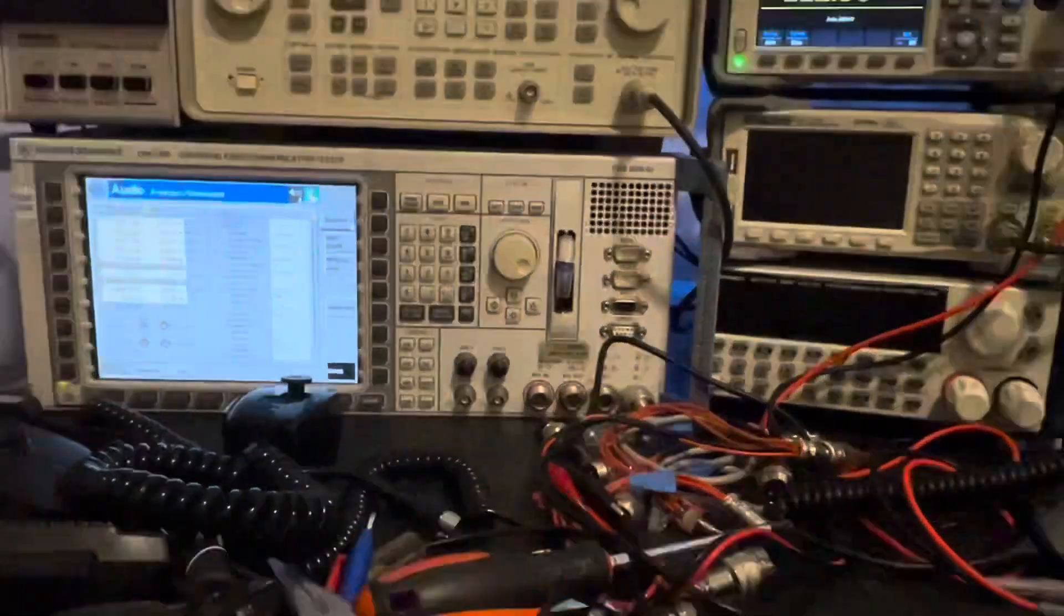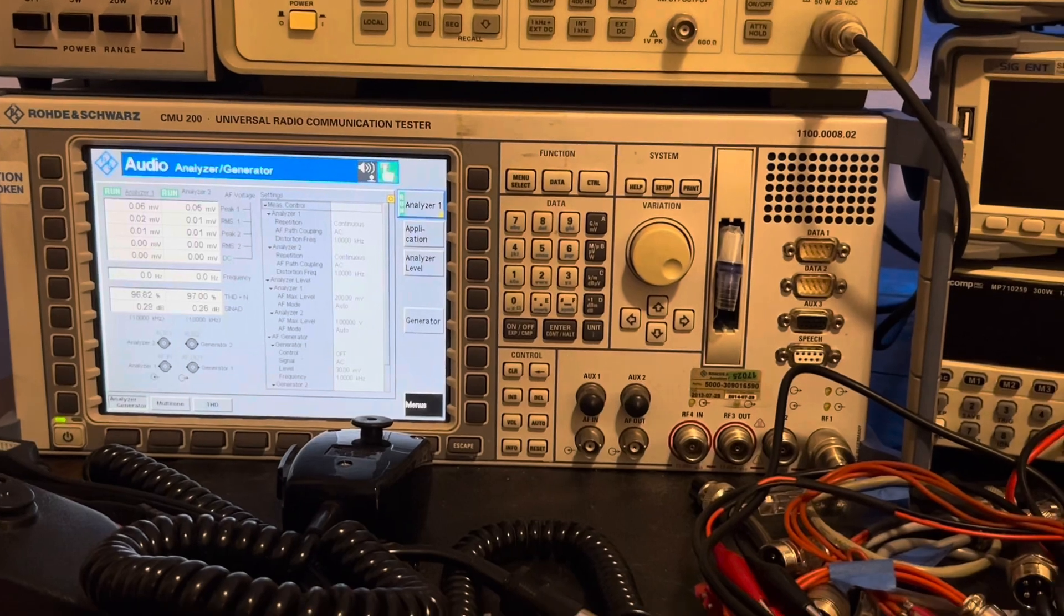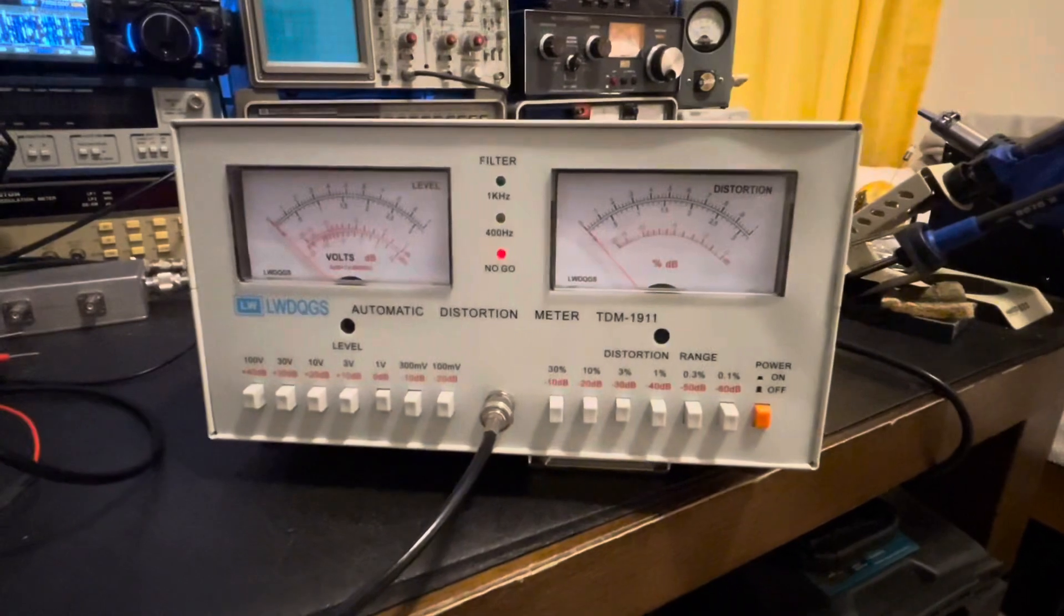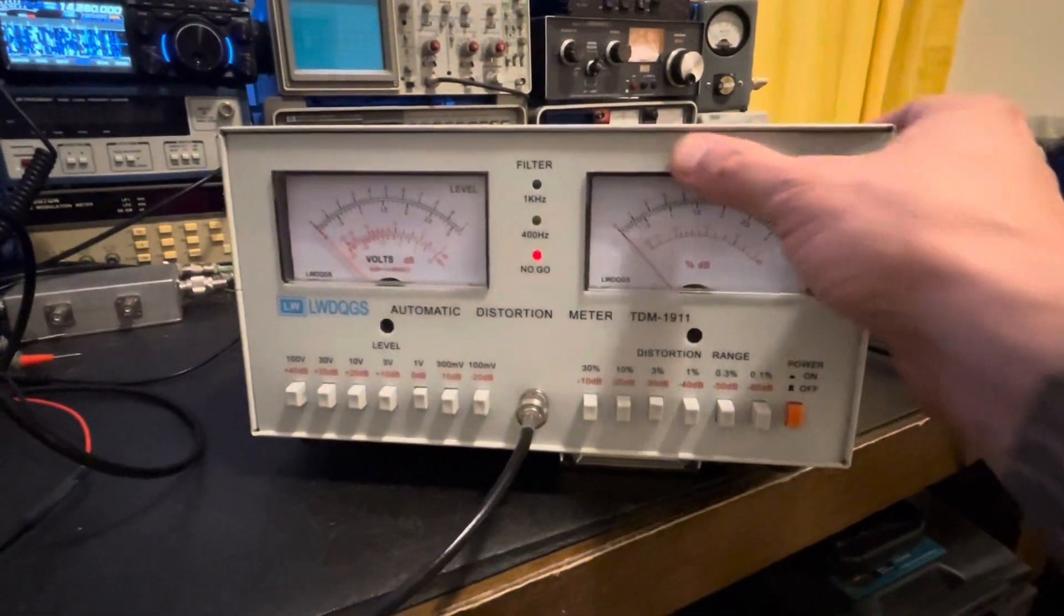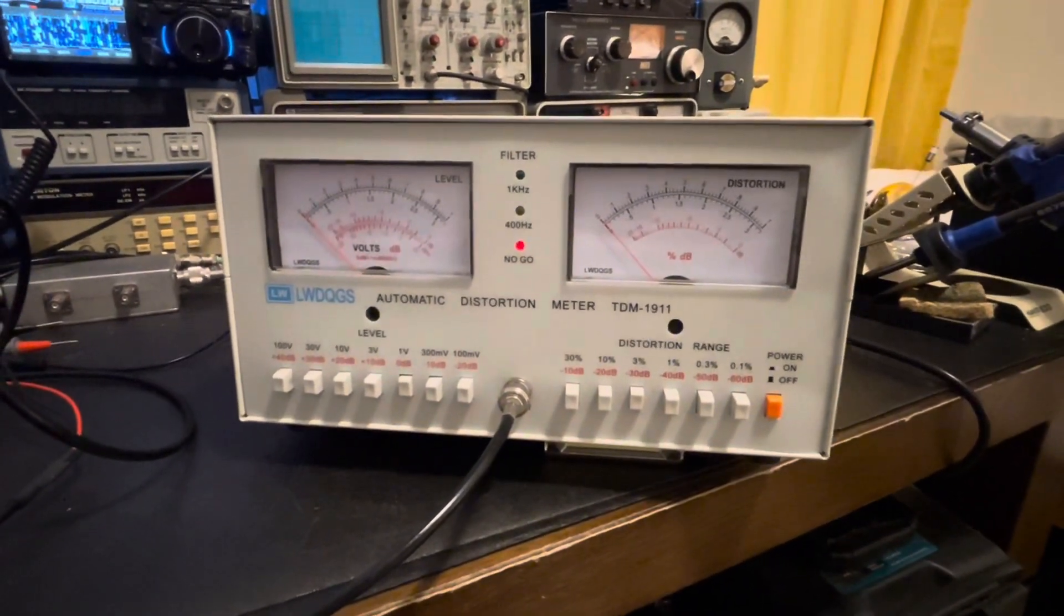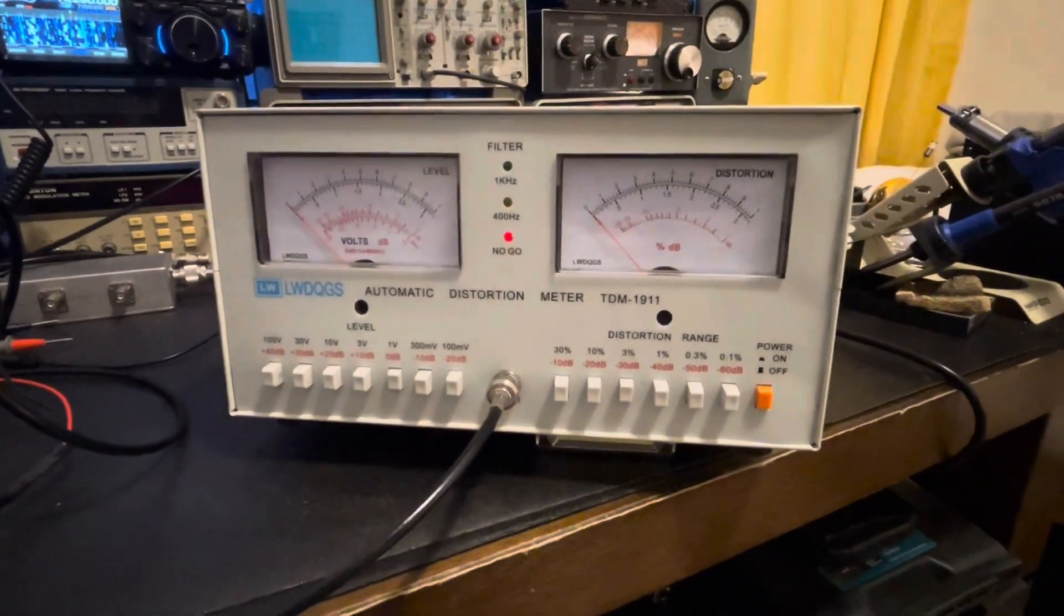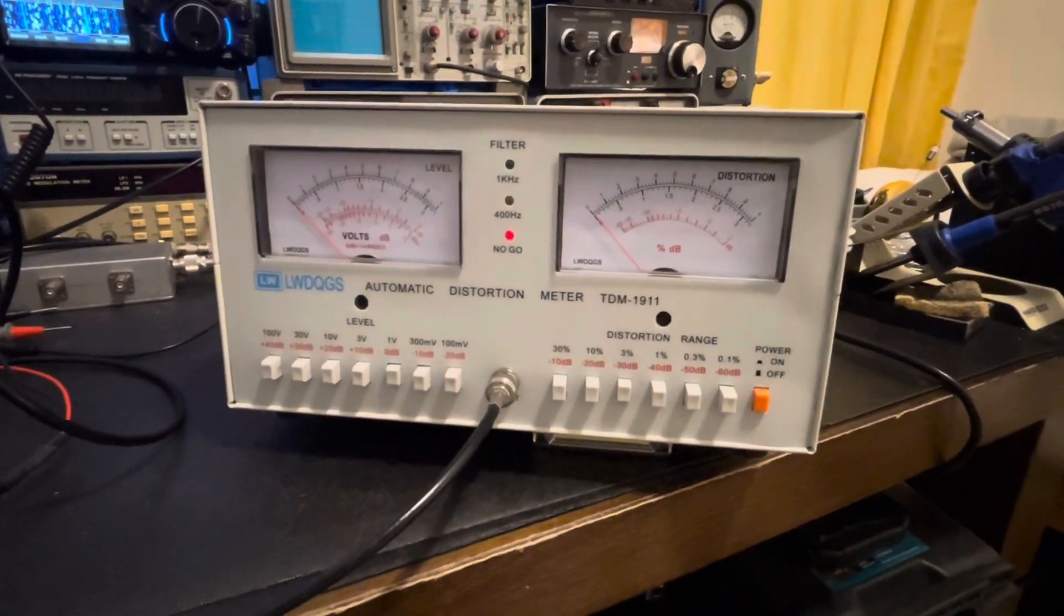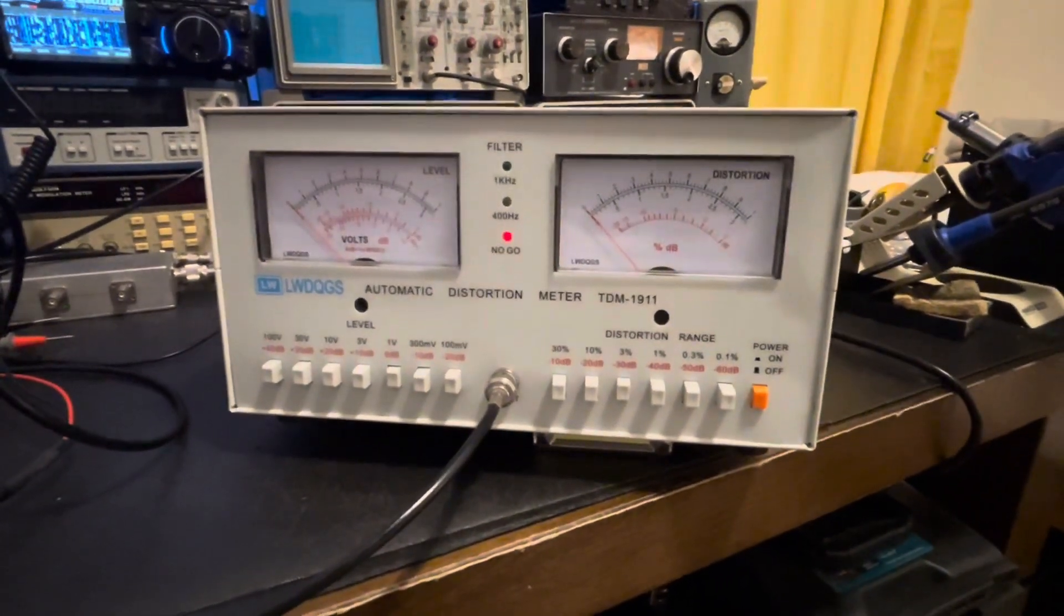We'll compare it to the Rohde & Schwarz CMU 200 THD measurement, so that's total harmonic distortion. I'm not really sure what this is supposed to be actually measuring, but we'll bounce the two off each other. When you look at distortion meters, even units that are 20, 30, maybe even older than 30 years from different brands, they're really pretty expensive. For even still at 250 bucks brand new, it's not a bad deal.